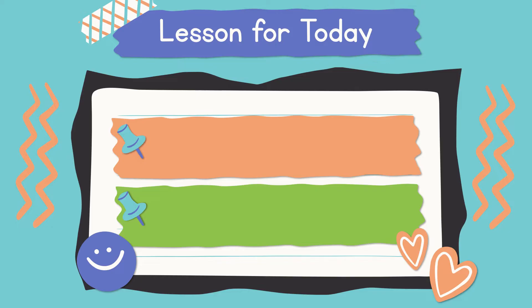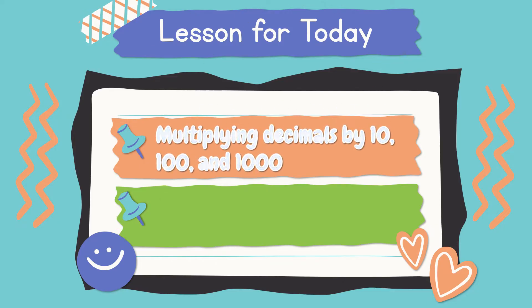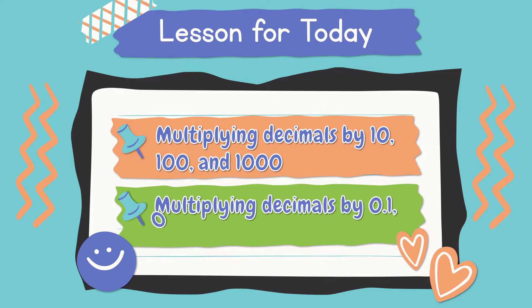Today's episode is all about multiplying decimals by 10, 100, and 1,000, and multiplying decimals by one-tenth, one-hundredth, and one-thousandth.